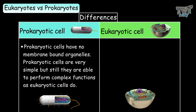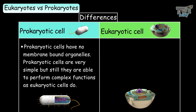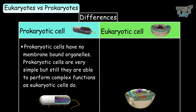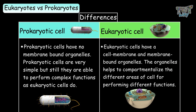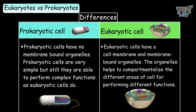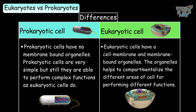Prokaryotic cells have no membrane-bound organelles and are very simple, yet still able to perform complex functions. Eukaryotic cells have a cell membrane and membrane-bound organelles that compartmentalize different areas of the cell for different functions, making eukaryotic cells far more complex than prokaryotic cells.